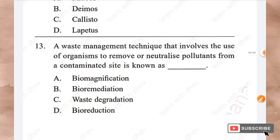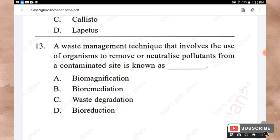Question 13: A waste management technique that involves the use of organisms to remove or neutralize pollutants from a contaminated site is known as what? Options: Biomagnification, Bioremediation, Waste degradation, Bioreduction. The right answer is Bioremediation.